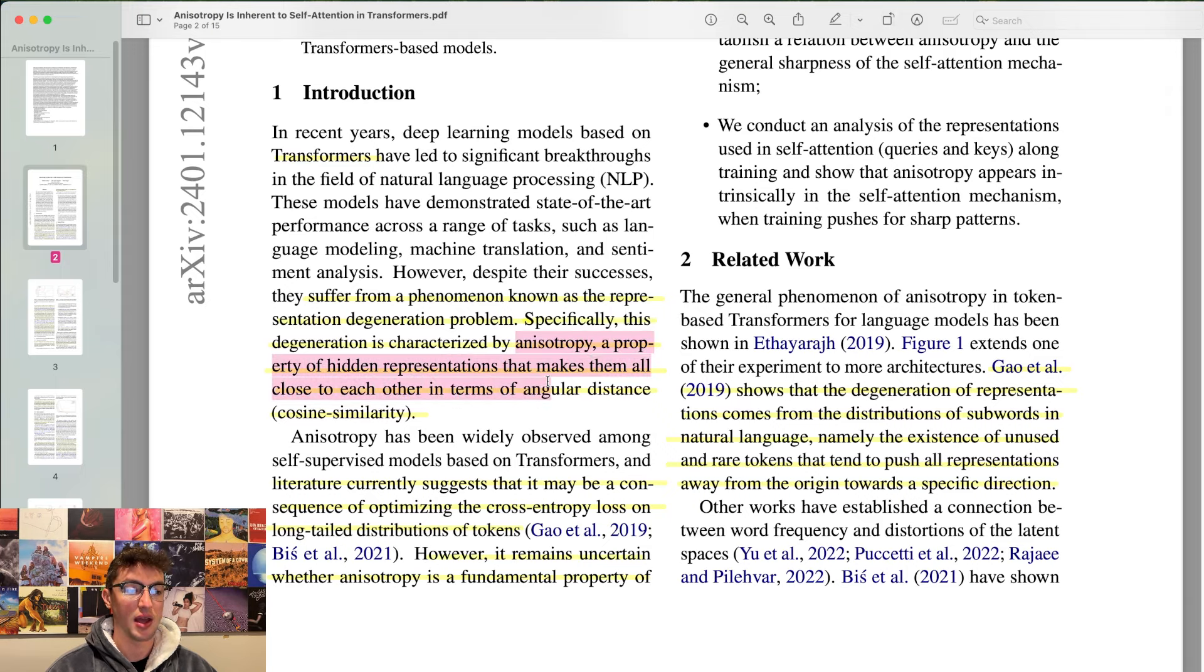Specifically, this degeneration is characterized by anisotropy, a property of hidden representations that makes them all close to each other in terms of angular distance, cosine similarity, right?